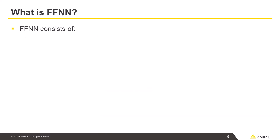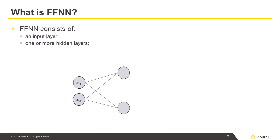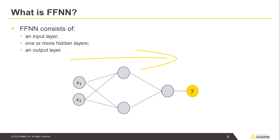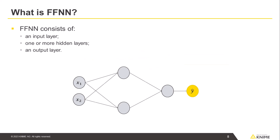An FFNN consists of an input layer, one or more hidden layers, and an output layer. The data proceeds from layer to layer in this order, without loops or backward connections. Each layer computes the product of input values and weights and adds biases. The result is fed into the neuron's activation function and passed on to the next layer.